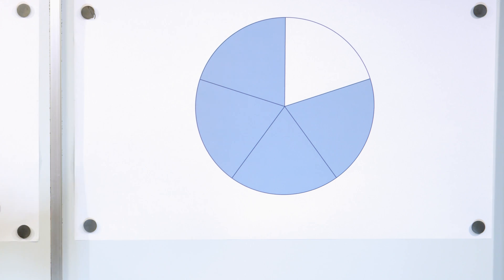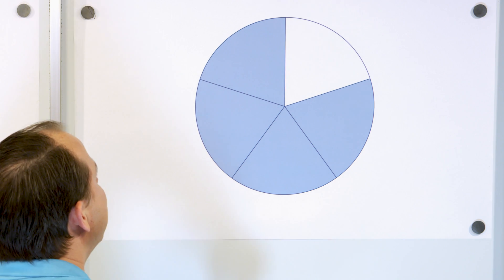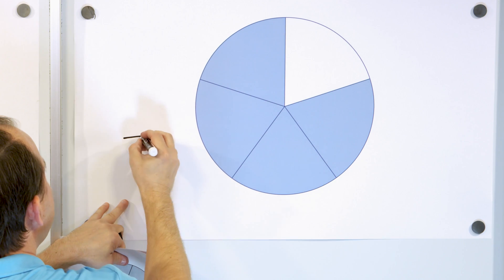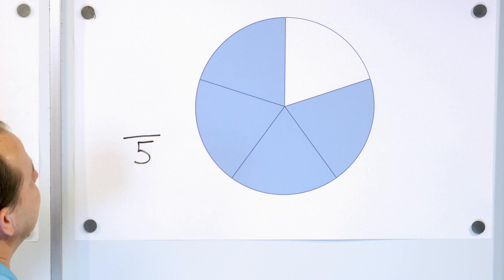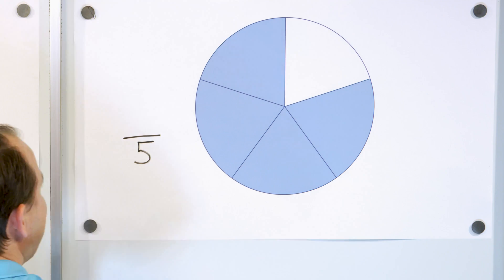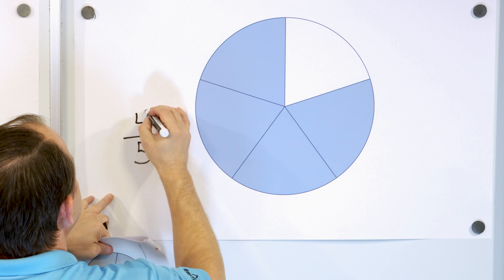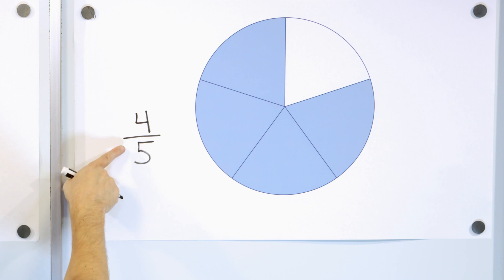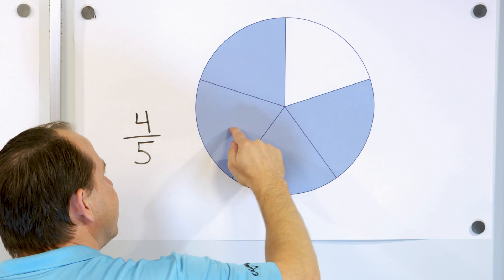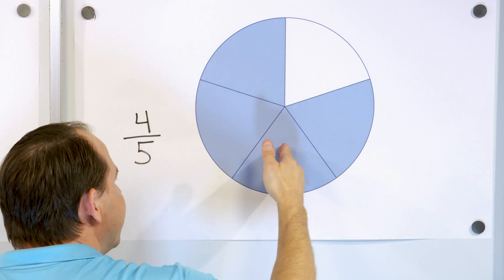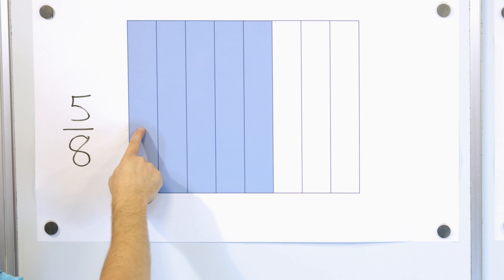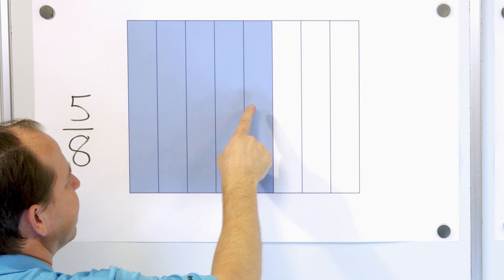What about this next one? How many pieces have we cut the object into? One, two, three, four, five pieces — so five goes on the bottom. How many do we have? One, two, three, four — so we have four pieces, four out of five. We call it four fifths. Counting by fifths: one out of five, two out of five, three out of five, four out of five — or one fifth, two fifths, three fifths, four fifths. Just like the previous one was one eighth, two eighths, three eighths, four eighths, five eighths.